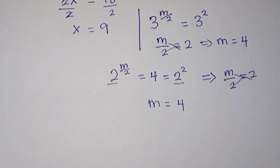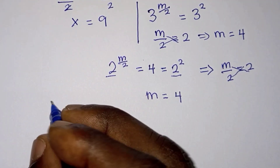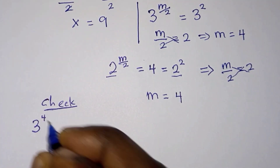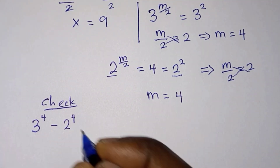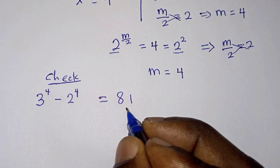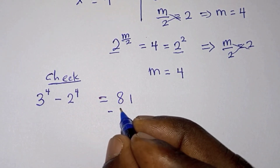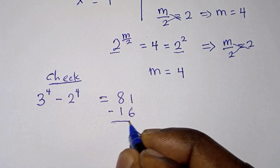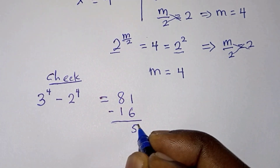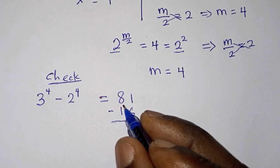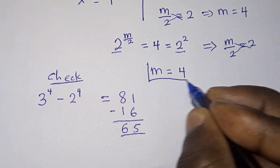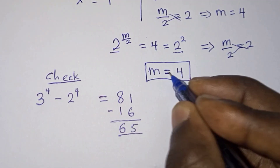Let's verify: 3 to the power 4 minus 2 to the power 4. That is 81 minus 16. Subtracting gives 65, which confirms our answer. So m = 4 is indeed a solution to the problem.